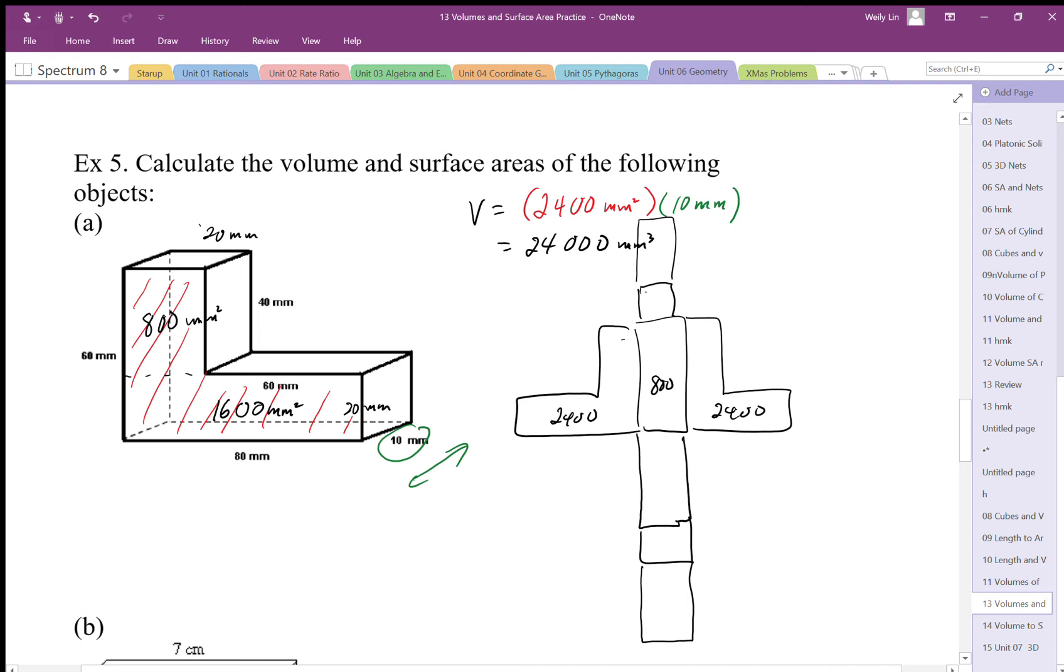Okay, so then I go about calculating these areas. So this is 10 by 20, so 200. This in here is 60 by 10, so that's 600 millimeter squared. On the back, that's going to be 60 by 10 again, so that's going to be 600.